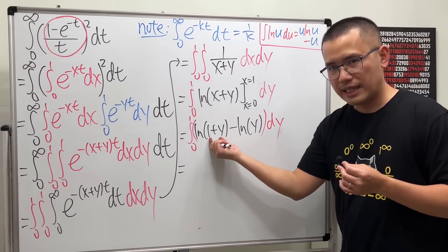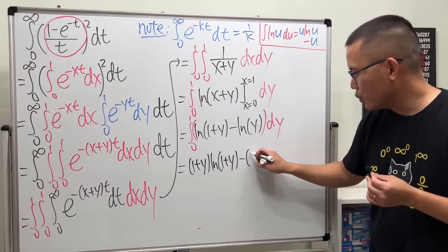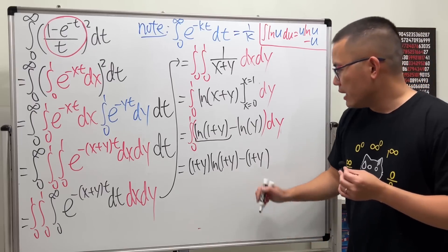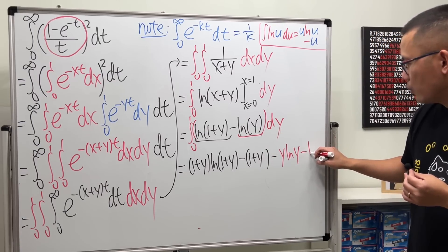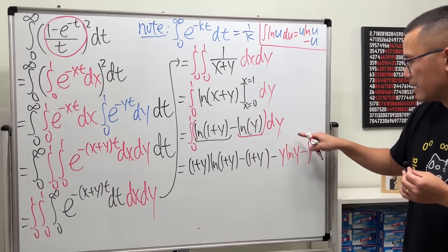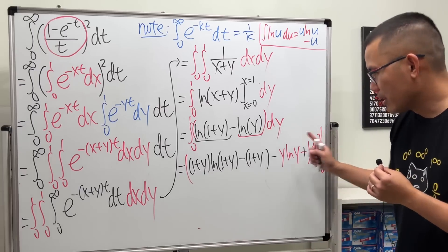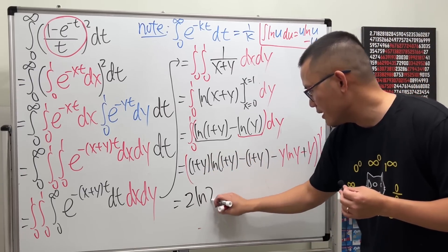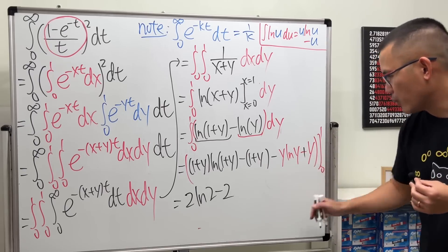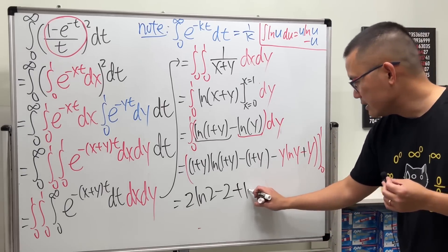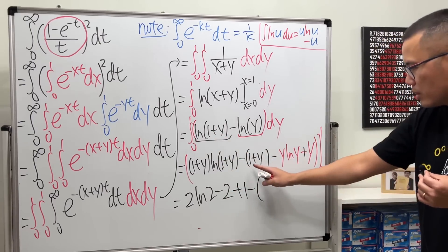Applying that formula: for the ln(1 plus y) part we get (1 plus y)·ln(1 plus y) minus (1 plus y), and then we subtract the ln(y) part, which gives y·ln(y) minus y, but with a minus sign making it a plus. Evaluating from zero to one: plugging in one gives 2·ln(2) minus 2, and with ln(1) equals zero the remaining terms give plus one. Plugging in zero we get minus one for the (1 plus y) part.